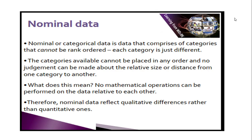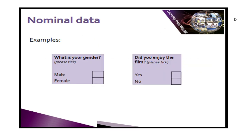Let's go deeper into nominal data. Nominal data is data that cannot be ranked or ordered. Remember: there is no relative size or distance from one category to another, and no mathematical operations apply. Nominal data reflects qualitative differences because it represents only one category. For example, if we find a questionnaire asking: 'What is your gender?'